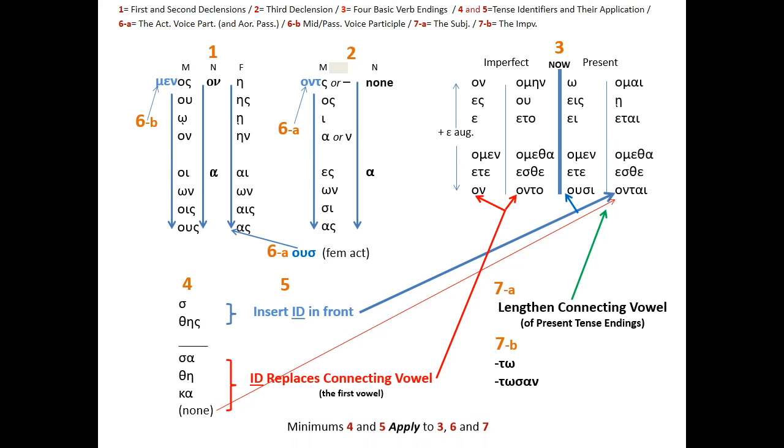The mi verb is on the next page. First of all, let me mention here minimums four and five apply to minimums three, six, and seven.